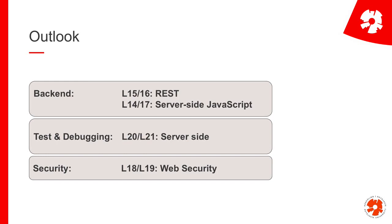So what happens now? We have three blocks left: the biggest is back-end, where we go to the server side. Connected to that is the remainder of testing and debugging, all on the server side. And finally, web security — a mix of everything, since security applies at the client, the server, and the network. Security is everywhere.